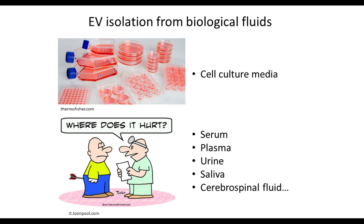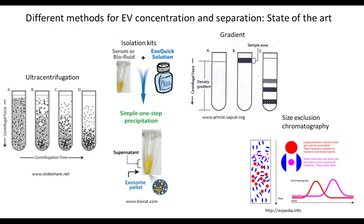The simplest matrix to separate extracellular vesicles is cell culture medium, which is considered simple since we can control its composition. We can also process more complex biological fluids such as patient-derived samples, which require much more attention. We can apply different isolation protocols according to the sample volume and application. Widely used methods for large volumes include ultracentrifugation. For smaller volumes, we can use commercially available precipitation kits, sucrose or iodixanol gradients, or size-exclusion chromatography.